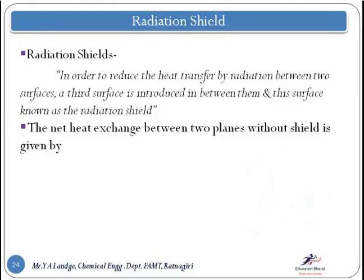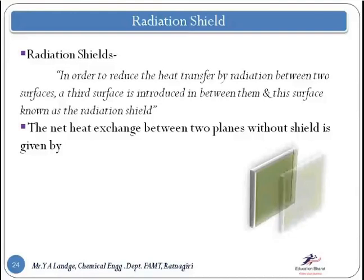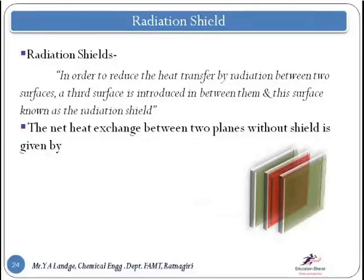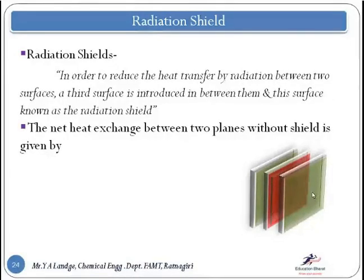What is a radiation shield? We have one surface which radiates energy, and another surface. In between, we introduce another surface — this is the radiation shield. The work of this radiation shield is that radiation coming from the first surface will reflect back, and only a very small amount of heat will pass from the shield to the third surface.